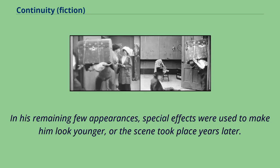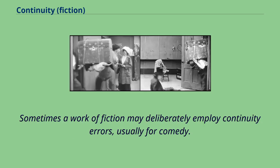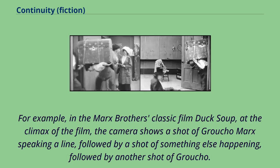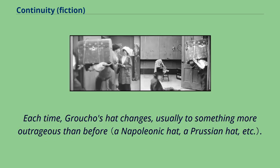Sometimes a work of fiction may deliberately employ continuity errors, usually for comedy. For example, in the Marx Brothers classic film Duck Soup, at the climax of the film, the camera shows a shot of Groucho Marx speaking a line, followed by a shot of something else happening, followed by another shot of Groucho. Each time, Groucho's hat changes, usually to something more outrageous than before.